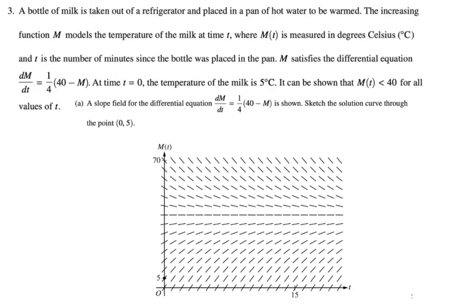So that's like an ordered pair that we're being given. It can be shown that m of t is less than 40 for all values of t. A slope field is shown, and we want to sketch the solution through 0, 5.